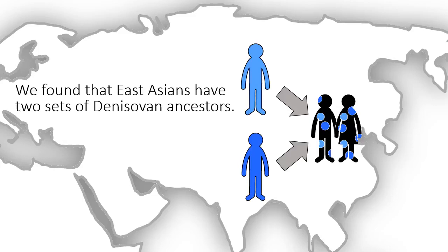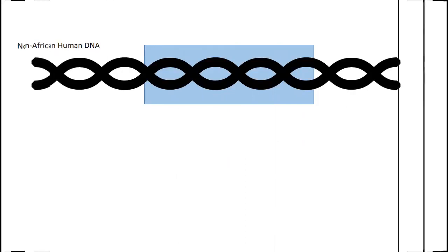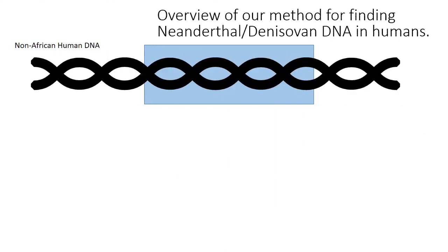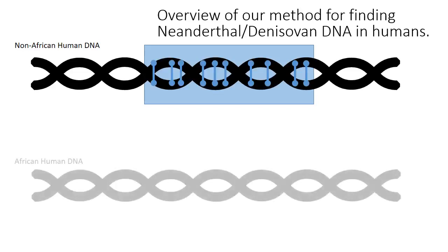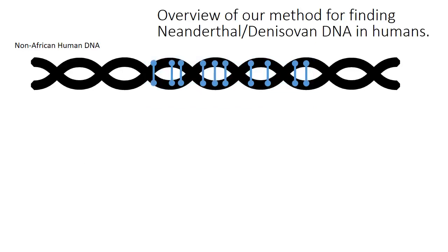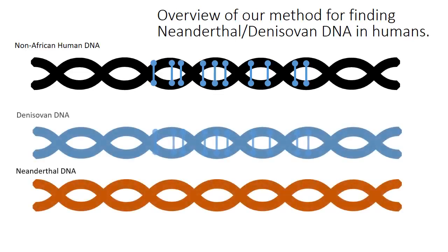How did we obtain this result? We developed a new method for finding segments of DNA in present-day humans that are likely to have been inherited from an archaic human population. Such segments contain a set of genetic variants that are absent or rare in Africa. We then compare the genetic variants on these segments with the Neanderthal and Denisovan genomes.